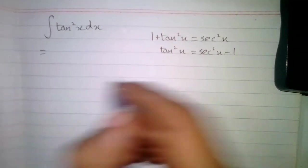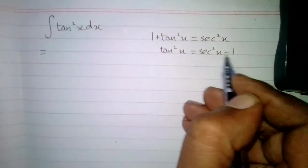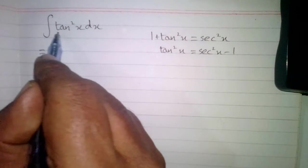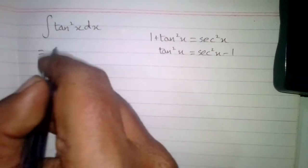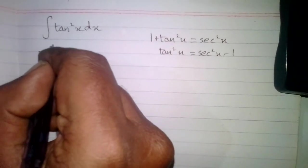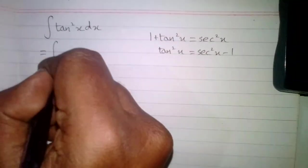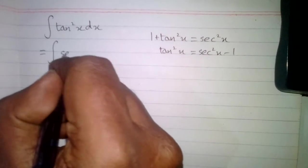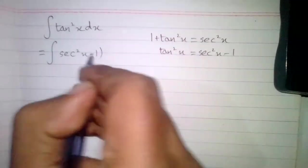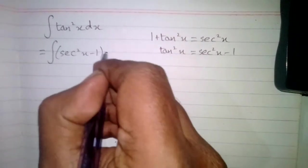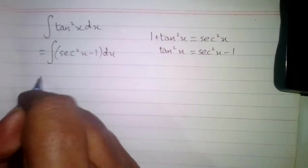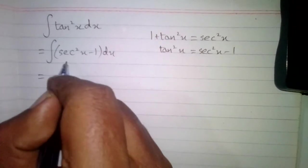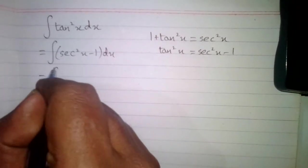We will put sec²x minus 1 instead of tan²x in this integral, so we have the integral of sec²x minus 1 dx. Now we will apply this integral on both of these terms.